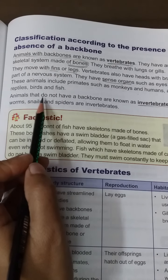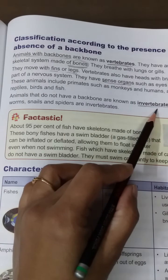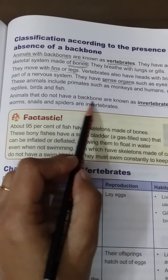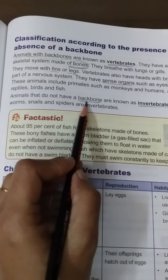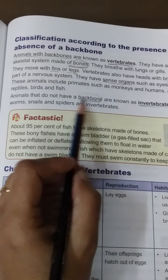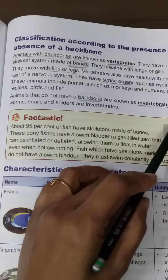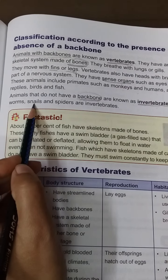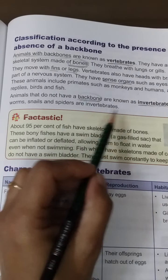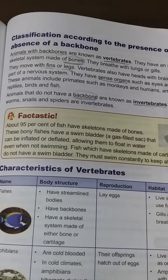Animals that do not have a backbone are known as invertebrates. The animals which lack a backbone are called invertebrates. Examples include insects, worms, snails, and spiders.